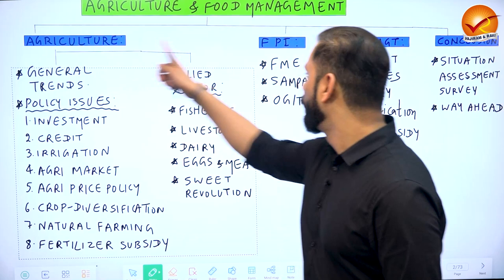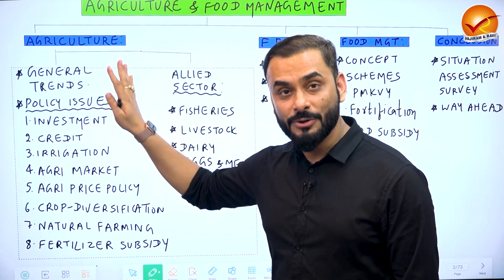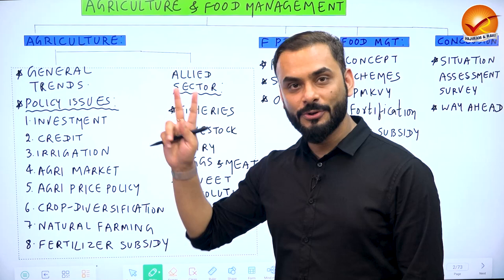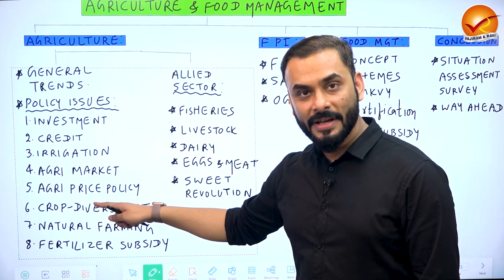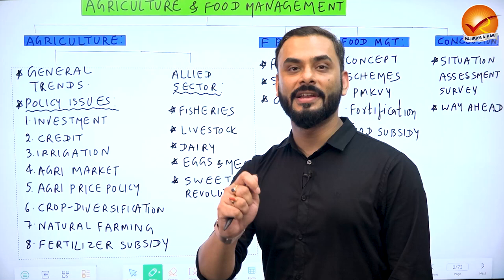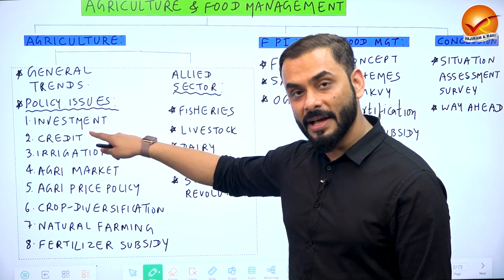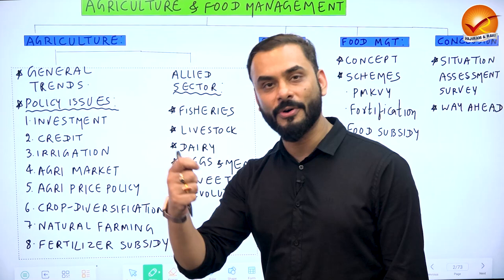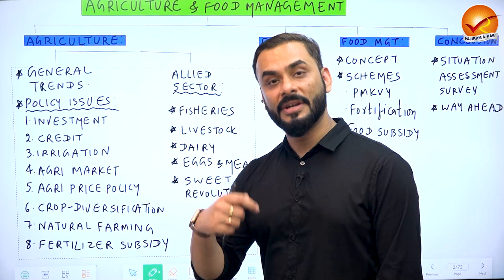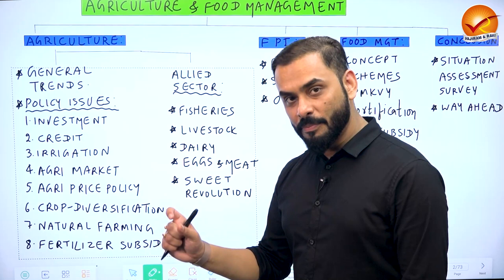We divide this topic into four important pillars. The first pillar is agriculture, under which we will look into two crucial areas. The first is general trends and policy issues related to agriculture — the same issues which tell us about the performance of Indian agriculture in the last one or two years. For example, we would look at the performance of Indian agriculture in terms of investment, credit, irrigation, agricultural market, agricultural price policy, and diversification.